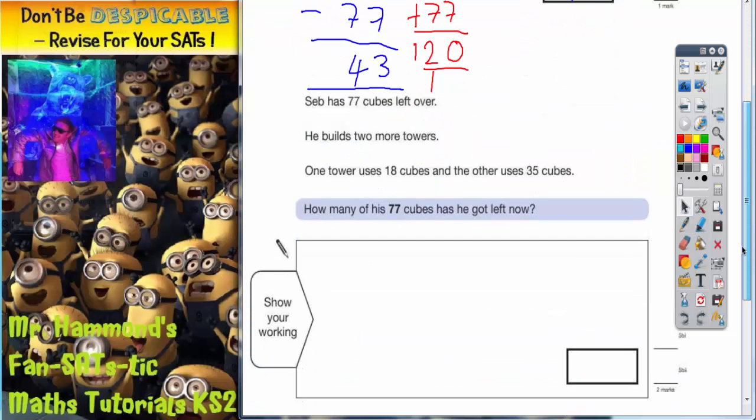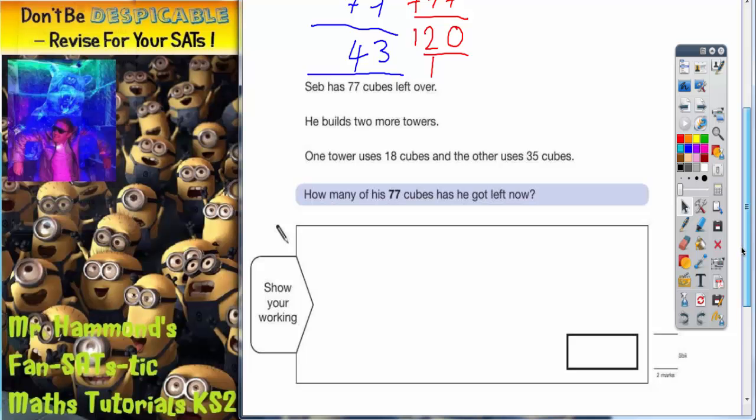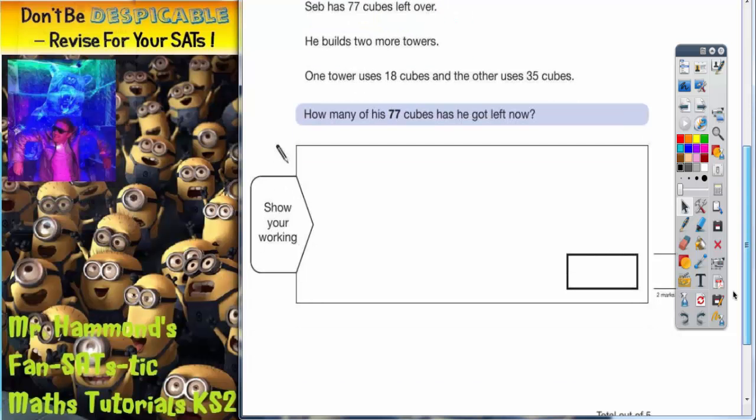Moving down to the next question. Seb has 77 cubes left over, so it's safe to assume we've got to continue using this 77. He builds two more towers. One tower uses 18 and the other uses 35. How many of the 77 cubes have you got left now?